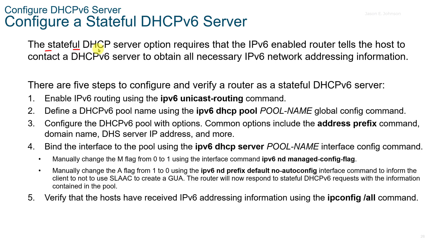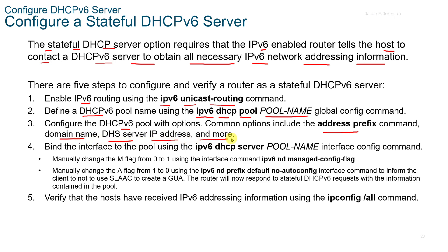The stateful DHCPv6 server option requires the V6-enabled router to tell the host to contact a V6 server to obtain all IPv6 network addressing information. There are five steps: enable V6 routing with the IPv6 unicast-routing command, define your pool with IPv6 DHCP pool and the pool name, configure the V6 pool with options including the address prefix command for domain name, DNS server, and IP address. Bind the interface to the pool using the IPv6 DHCP server interface config command. You can change the M flag from 0 to 1 using the IPv6 ND managed-config-flag command, or the A flag from 1 to 0 using IPv6 ND prefix default no-autoconfig. Verify using ipconfig /all on the Windows host.